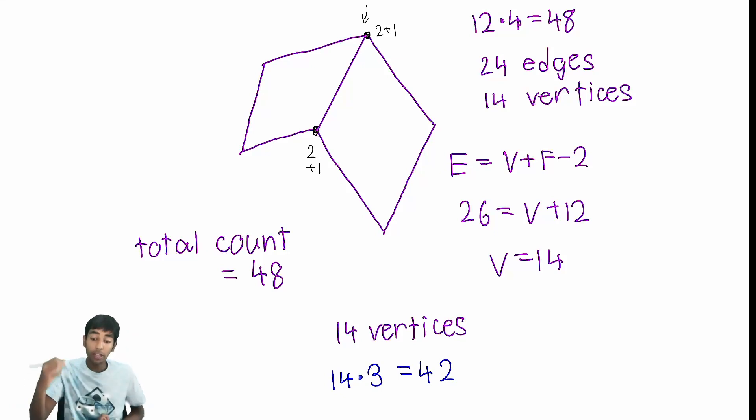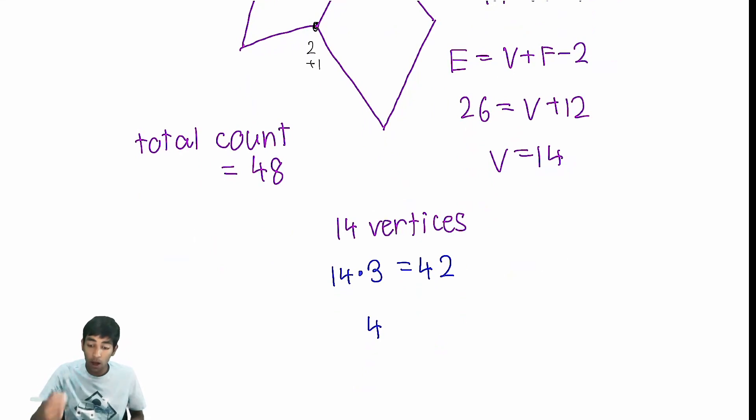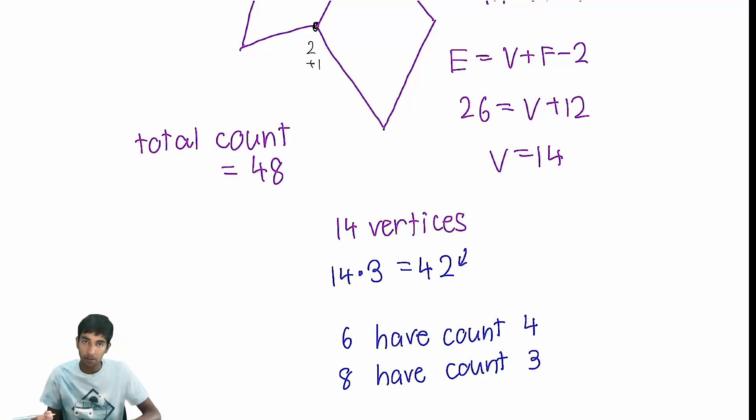So we need, each one that has 4, each vertex that has a count of 4, adds 1 to this. Out of these 14 vertices, therefore 6 of them have count 4. 6 of them have 4 edges that are extruding from that vertex. And 8 of them have count 3. And if you add this up, you can see indeed, 8 times 3 plus 6 times 4 is 48.